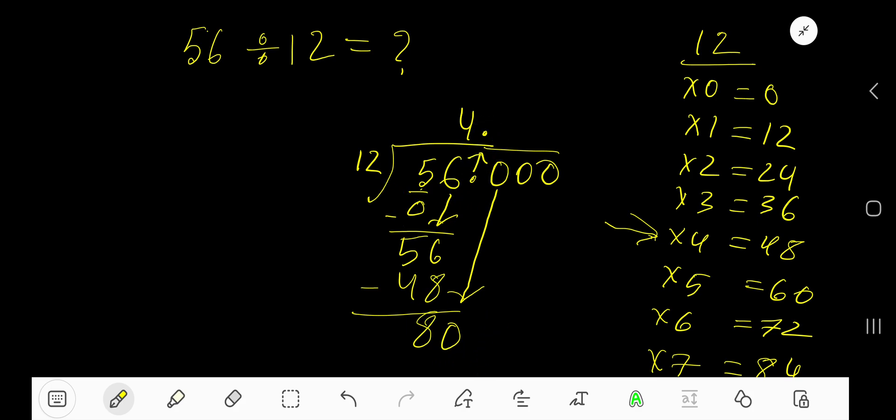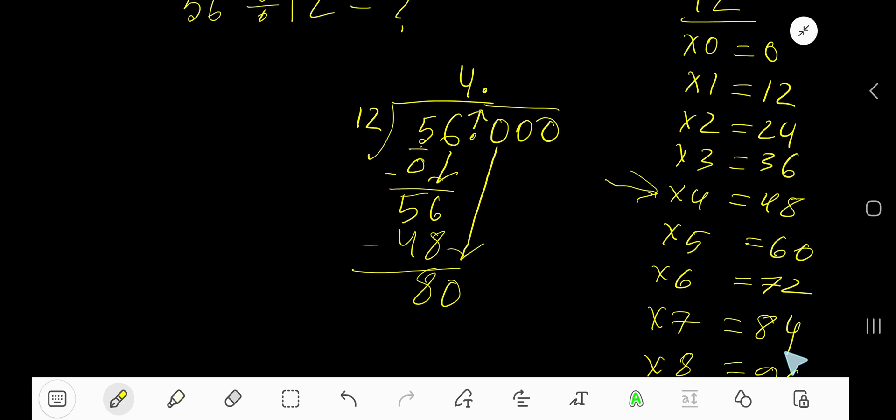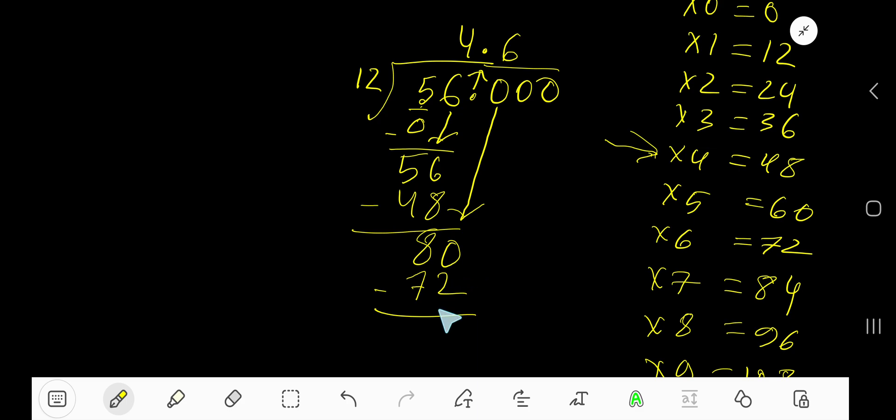12 goes into 80 how many times? 12 goes into 80, 7 times is 84, which is greater. So 6 times. Write 6. 6 times 12, which is 72. Subtract, you are getting again 8.